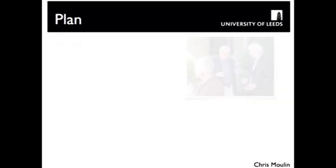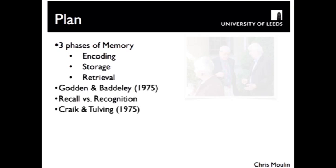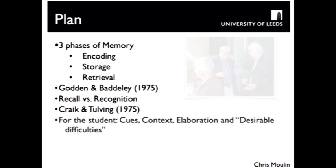This is a core concept in cognitive psychology and one that I encounter in my daily life as a memory researcher. The plan for today has basically got three parts: I'm going to start off by introducing you to the three phases of memory, talk about two classic studies from the 1970s about the relationship between encoding and retrieval, and also wrap up by telling you a little bit about contemporary research using memory cues and the ways in which we can help people's memory impairment.